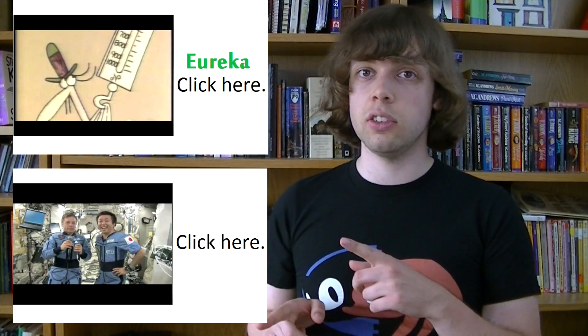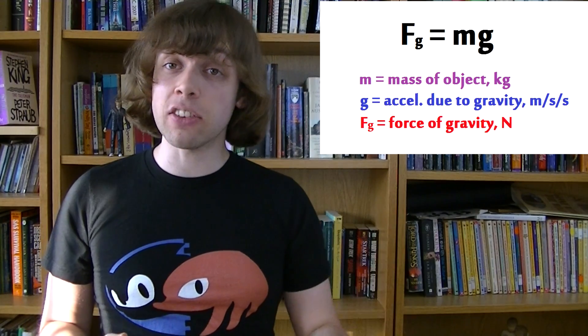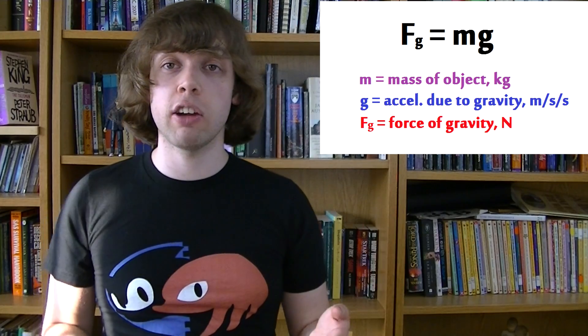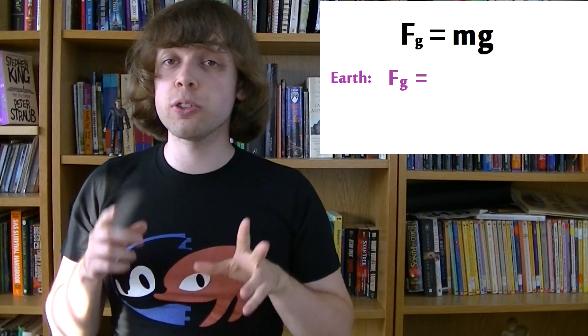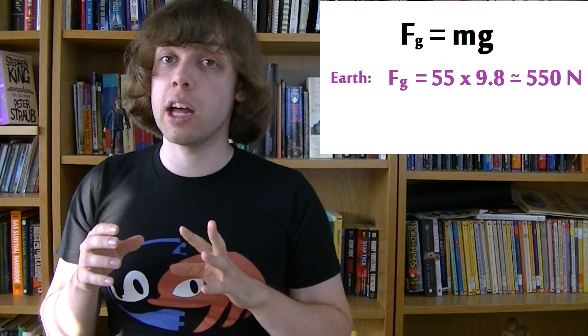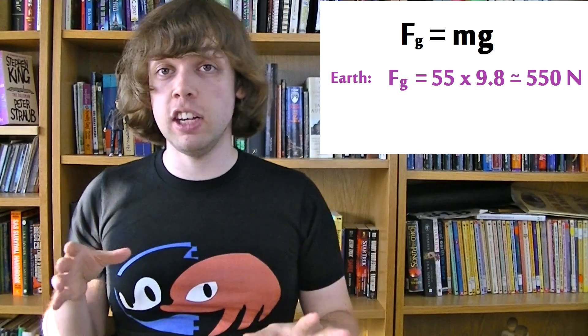I suggest if you're not 100% clear on these topics, you watch one of these videos to reinforce it. If you hear it from a few different people, it might be easier to understand. So how does all of this look mathematically? The force of gravity, sometimes written as Fg, is equal to mg, where m is the mass of the object in kilograms, and g is the acceleration due to gravity, which is negative 9.8 on Earth. So if you weigh 55 kilograms, then the force of gravity acting on you is 55 multiplied by 9.8, which is approximately 550 Newtons.